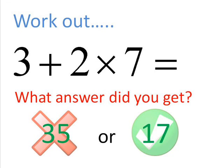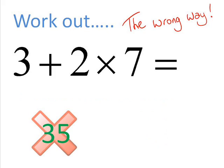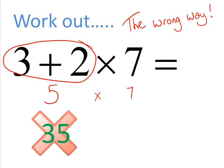First off, we'll have a look at the different ways that you might have got your answer. We'll look at the wrong way of doing it first, or how you got the answer of 35. So the way I'm guessing you probably did this if you got the answer of 35 is like this. First you went 3 plus 2, and you got 5. And that left you with 5 times 7.